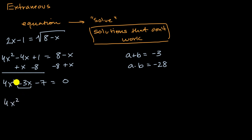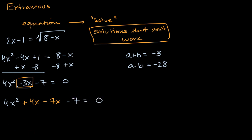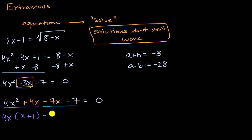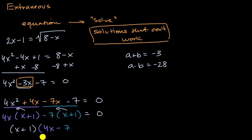Factoring by grouping: we have 4x squared plus 4x minus 7x minus seven equals zero. Grouping the first two terms, we can factor out 4x to get 4x times (x plus one). From the last two terms, we factor out negative seven to get negative seven times (x plus one). Then factoring out (x plus one), we get (x plus one) times (4x minus seven) equals zero.